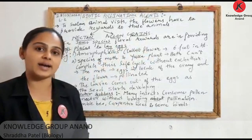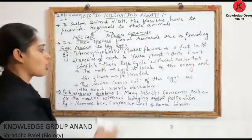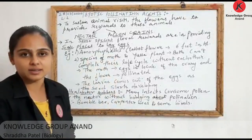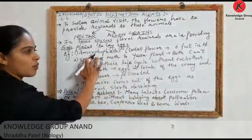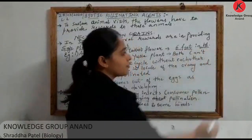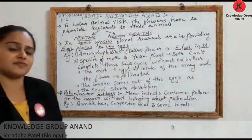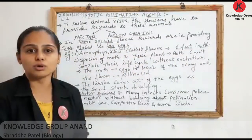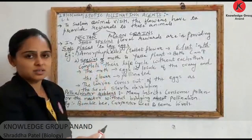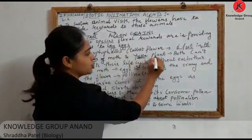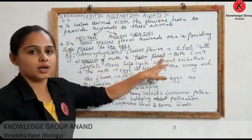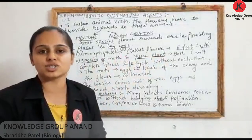One example is Amorphophallus, the tallest flower, with a height of 6 feet — you need to memorize this. It allows insects to lay their eggs in its flower. Another example is the Yucca-moth relationship. The moth is a kind of insect. Yucca is a plant. The species of moth and Yucca plant live in a kind of symbiotic relationship.